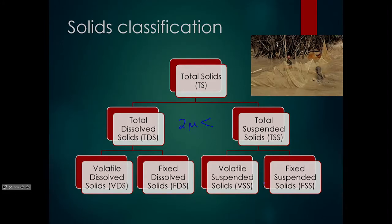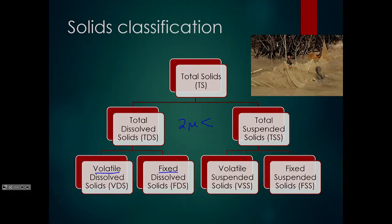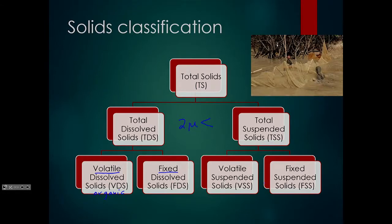Dissolved solids will stay mixed in the water and other processes are needed to remove them. We can also separate solids into volatile and fixed categories. Volatile means that if we evaporate all the water and then heat the remaining solids extensively, some will also evaporate — usually those that are organic in nature, created by some form of life, such as bacteria bodies or decomposing material. Fixed solids are things like minerals left behind from the erosion of rocks.